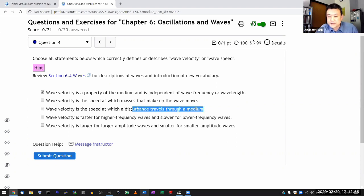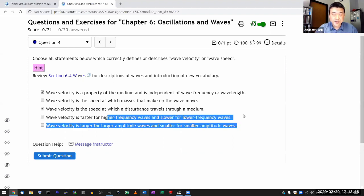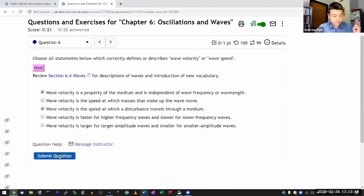Wave velocity is the speed at which a disturbance travels through a medium. And another word for this is a speed at which wave propagates. This description here is the description of wave propagation. Wave velocity is faster for higher frequency? No. Wave velocity is larger for a large amplitude? No. And I think if you watch the videos on wave velocity actually you know that these last two are incorrect.